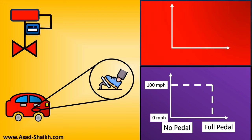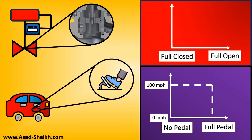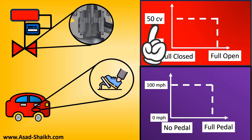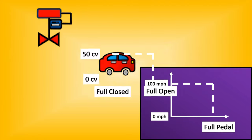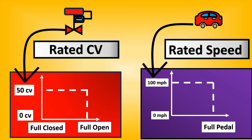This can be compared to a valve. The pedal position is analogous to the open/close position of the valve. On the x-axis we plot from fully closed to fully open, and on the y-axis we plot CV, which is the flow capacity. When the valve is completely open, there is a maximum CV it can provide. This is called the rated CV — just as 100 miles per hour is the rated speed of the car, 50 CV is the rated CV of the control valve.